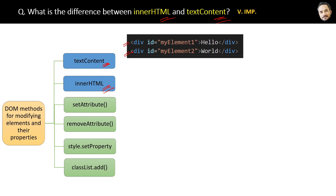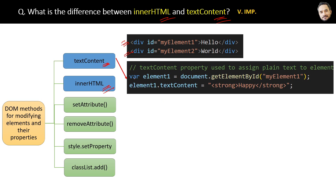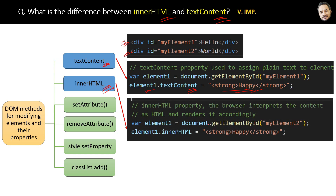First, the textContent property can be used to assign plain text to the first element, like this. And then the innerHTML property can be used for the second element, like this.